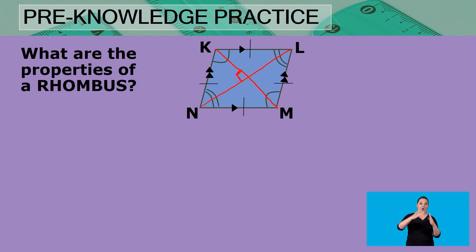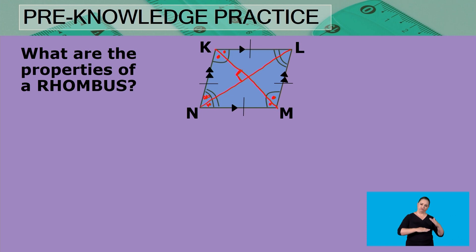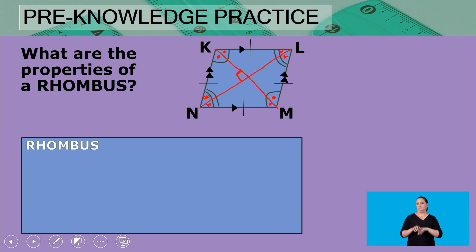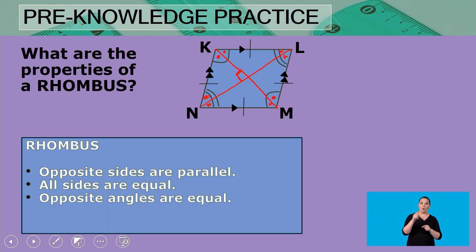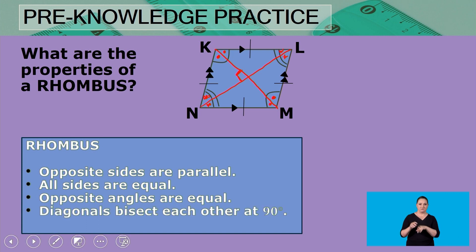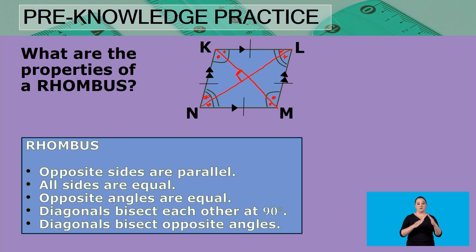In addition, the diagonals bisect the opposite angles. Diagonal KM bisects angle K and angle M, and diagonal NL bisects angle N and angle L. In summary, the properties of a rhombus are: opposite sides are parallel, all sides are equal, opposite angles are equal, the diagonals bisect each other at 90 degrees, and the diagonals bisect the opposite angles.